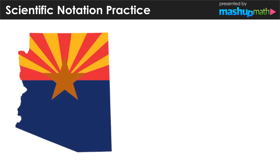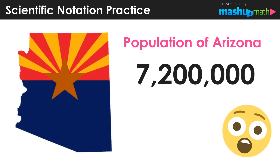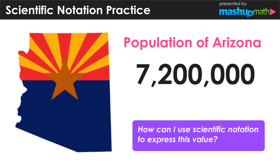Let's take a look at a really big number. The population of the state of Arizona is 7,200,000 people. And now we can ask, how can I use scientific notation to express this value? If you remember from our definition, we're talking about numbers that can't be expressed conveniently in decimal form. Thinking about this number as a decimal, we can just add a point zero to the end as a placeholder for now.